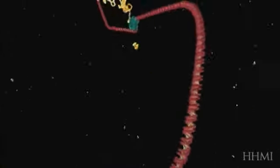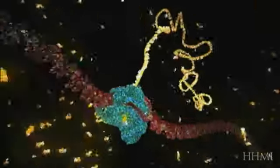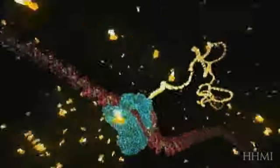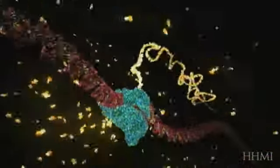The yellow chain snaking out of the top is a copy of the genetic message, and it's made of a close chemical cousin of DNA called RNA.